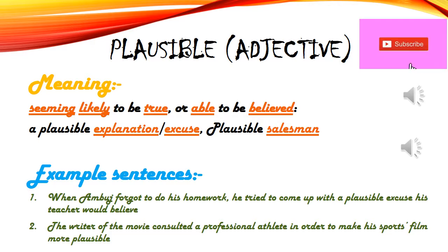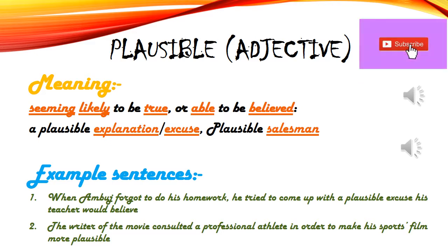Plausible ka matlab hai: woh logic, woh excuse, woh baatein jo hume sahi lagti hain — jo hume lagti hai ki sach mein it is possible literally, ya koi bhi kar sakta hai. Jaise ki agar aap apne boss ko kuch reason de rahe ho aur boss ko lag raha hai, 'Nahi, yeh sahi bol raha hai' — is wajah se yeh hua hoga — then that excuse or explanation is plausible.